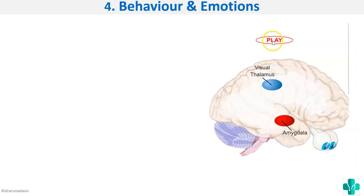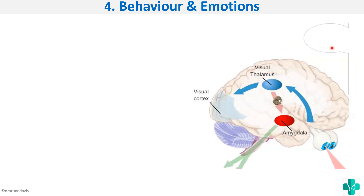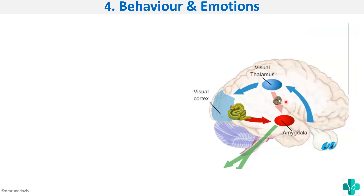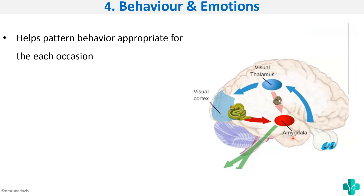The next function is behavior and emotions. For example, if we see a rope on the ground, the brain initially tells us it might be a snake and we should run. On closer inspection we realize it is just a coiled rope, and then the cortex tells the amygdala there is no danger. This is how the brain analyzes threats. The limbic system helps pattern our behavior appropriate for each occasion, creating awareness at a semi-conscious level even before we are fully conscious.